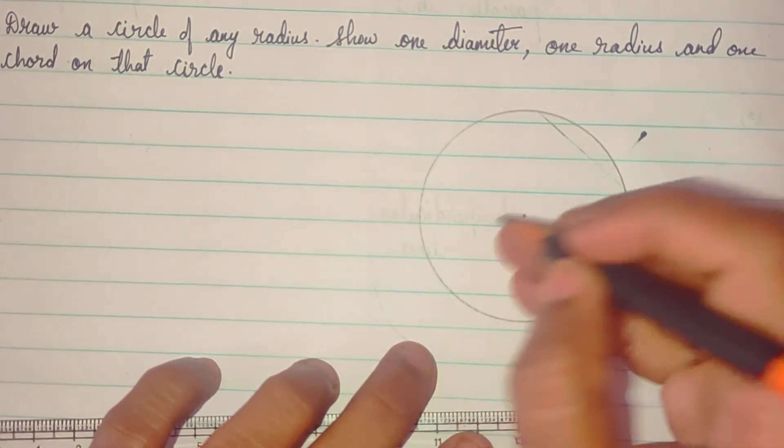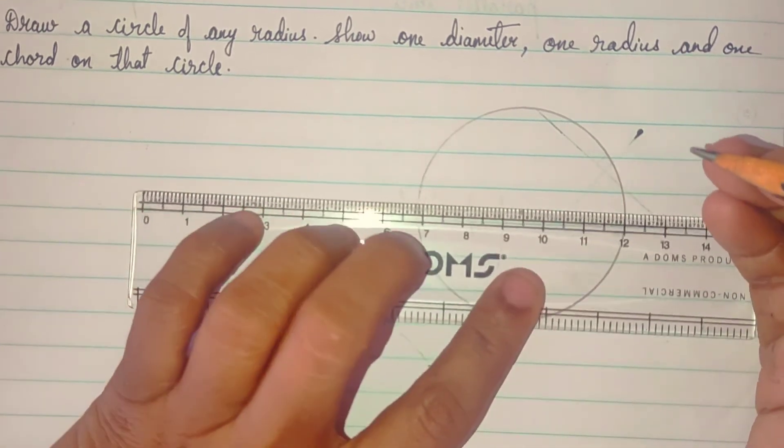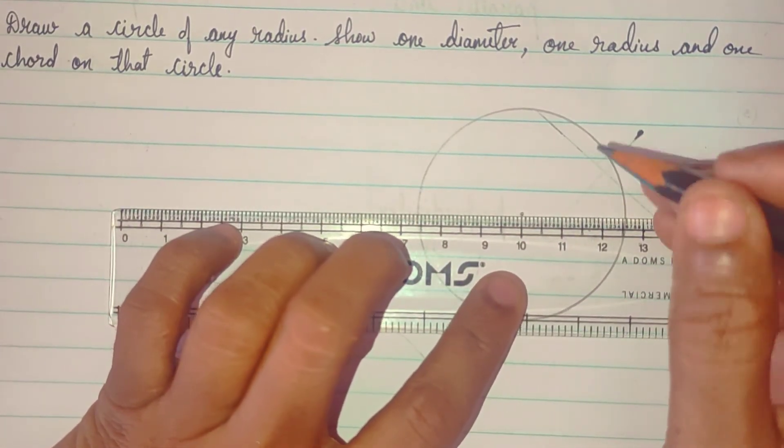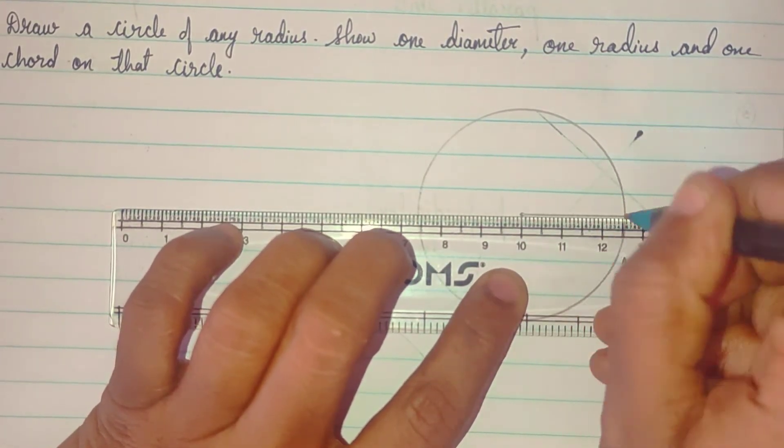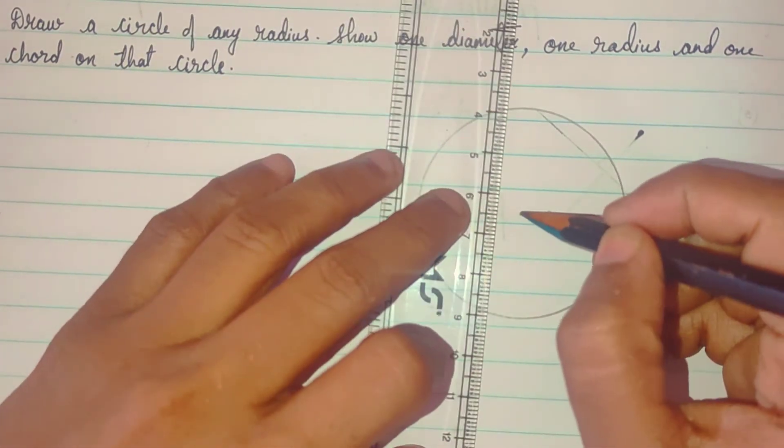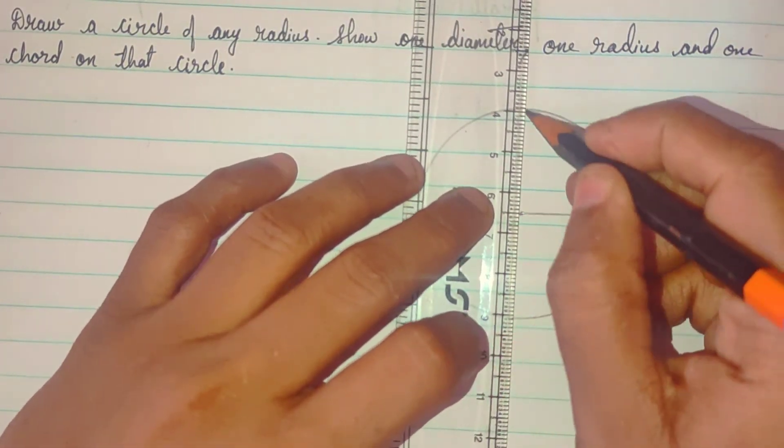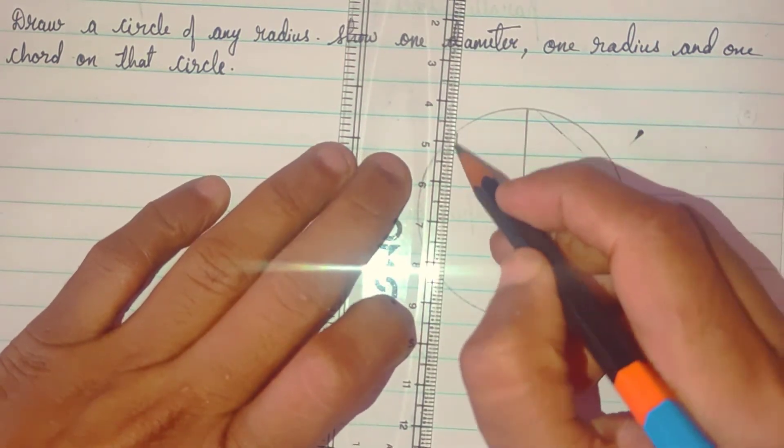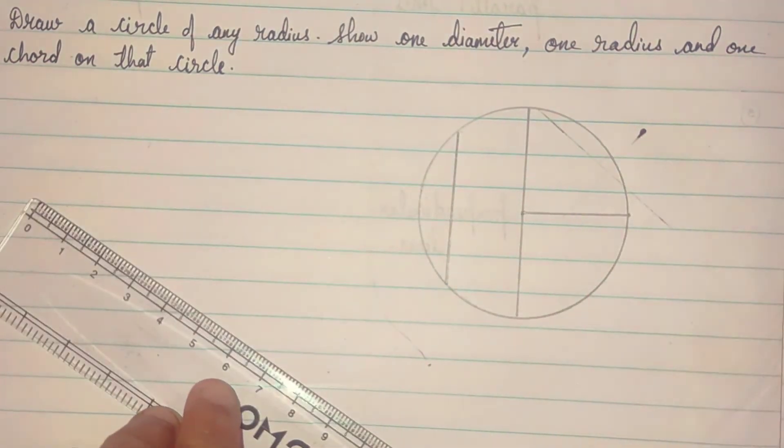Then, this is your center. Now, what they have asked to show one radius. So, ye ho gaya radius. And then, diameter. Diameter and one chord.